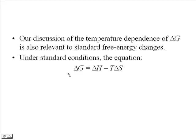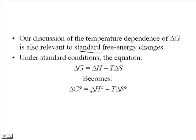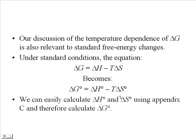Under standard conditions, the equation delta G equals delta H minus T delta S still applies. If we know the standard enthalpy change and standard entropy change, we can find the standard free energy change, where the temperature must be 298 K. You could look up the values from the book or be given them on an exam to find delta G standard.